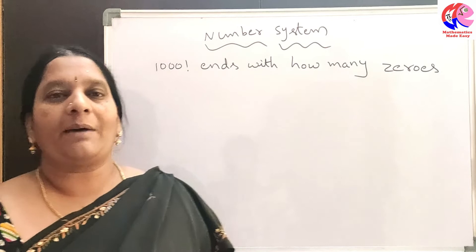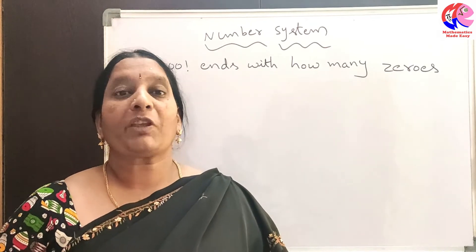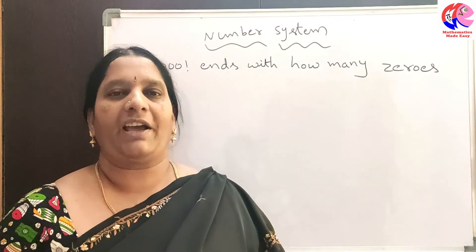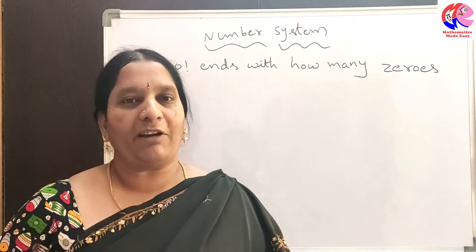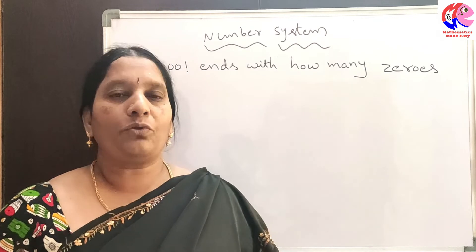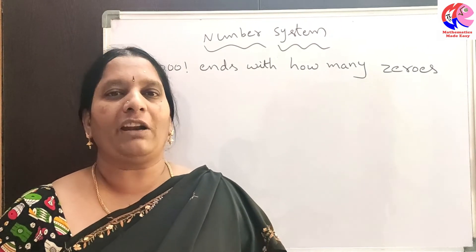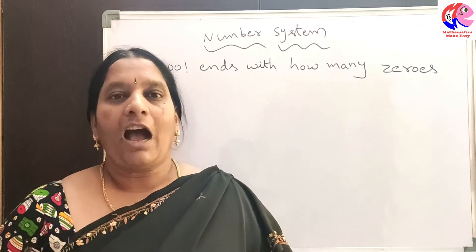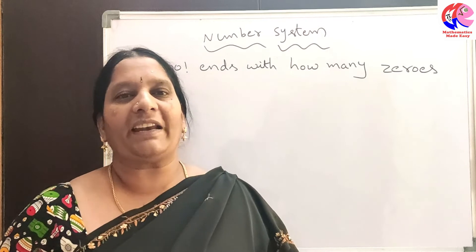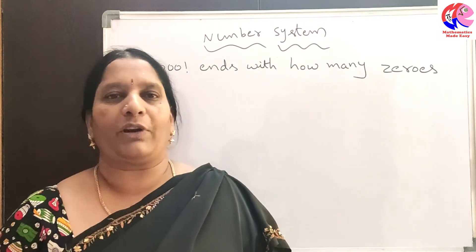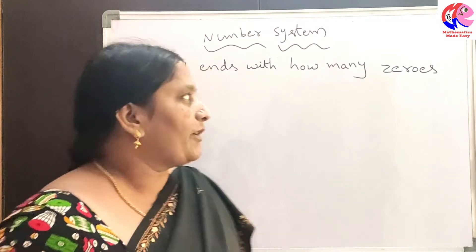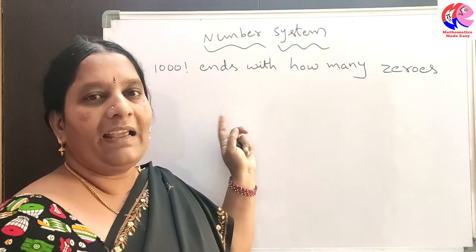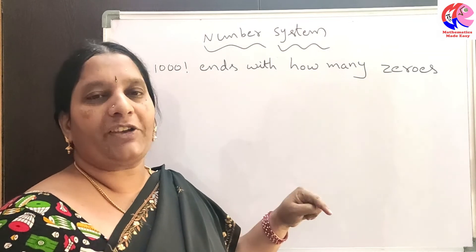Whenever we are finding how many zeros a number ends with, we need to find the highest power of 2 and the highest power of 5. We need to take the minimum of these two powers. The highest power of 5 is what we should consider, because however many 5s there are, those many 2s will also be present in any factorial. So finding the number of zeros in 1000 factorial is equivalent to finding the highest power of 5 in 1000 factorial.